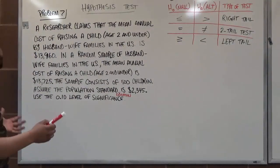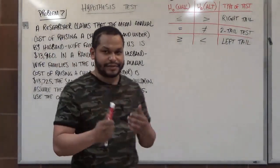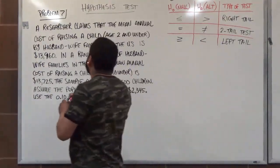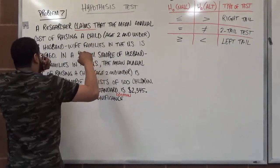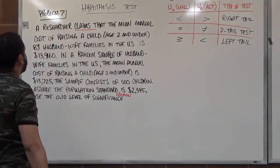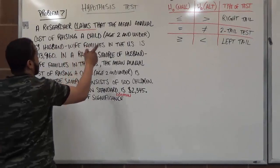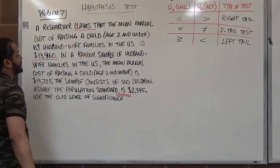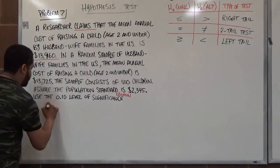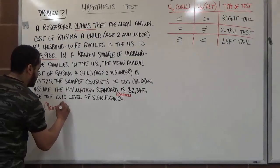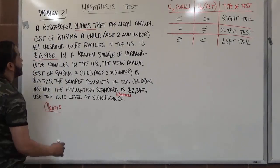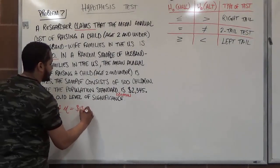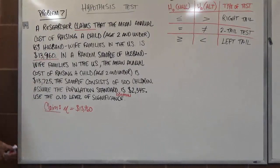In any hypothesis test, the first thing we want to do is identify the claim. The claim here is the researcher's claim: that the mean annual cost of raising a child, age 2 and under, by husband and wife families in the U.S. is $13,960. So here's our claim.